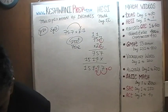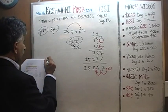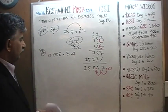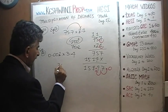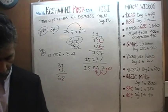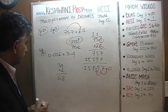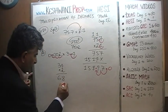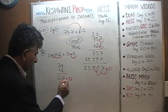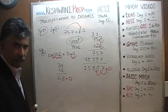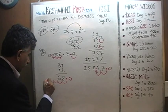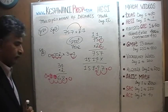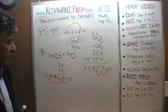Let's do number 2. They are looking for 0.002 times 3.4. Simply multiply 34 times 2, which is 68. Now take care of the decimal point. In 0.002 we have three decimal places; in 3.4 we have one decimal place — that's four total. We pick up our decimal from 68 and move it four places to the left, inserting two zeros. The answer is 0.0068.